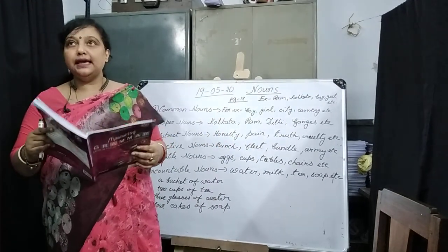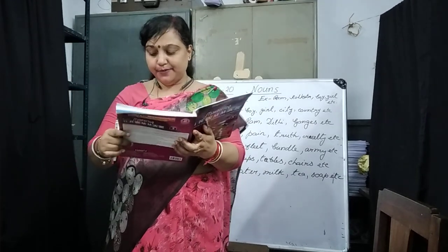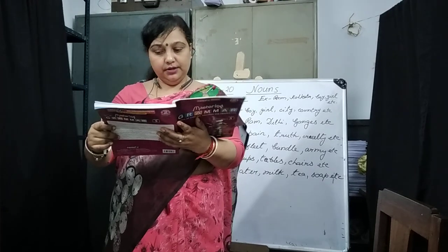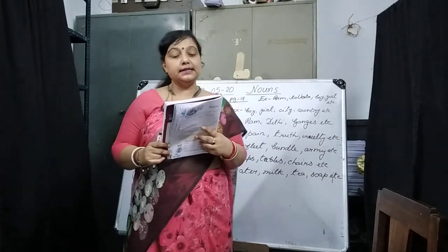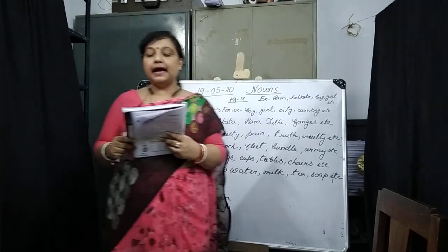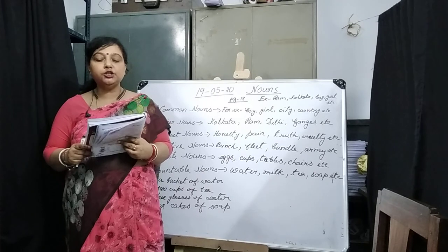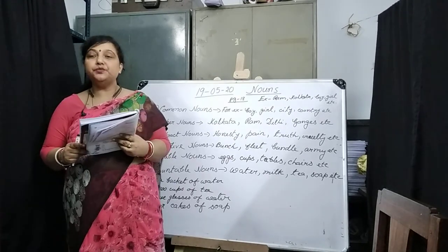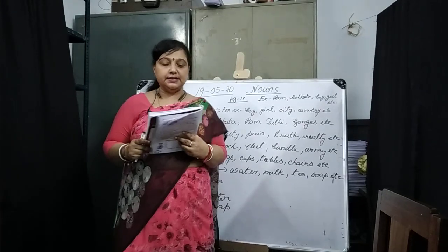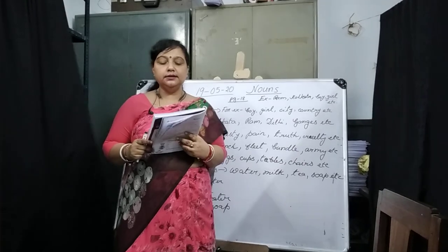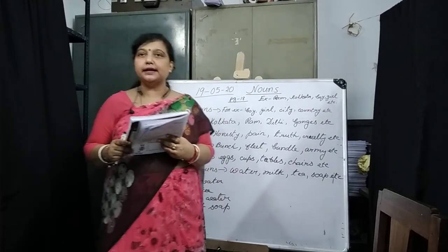Now let's come to the exercises. Open page 19, class 5 students. Exercise A: circle the common nouns and underline the proper nouns. Number 1: 'Mr. Verma is a doctor in this hospital.' Mr. Verma is the proper noun — it is the special name of a particular person. Doctor and hospital are common nouns, so circle doctor and circle hospital.